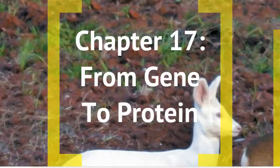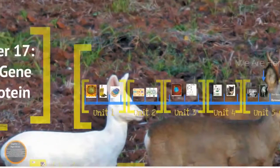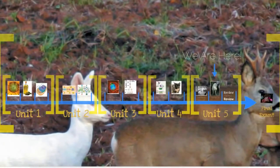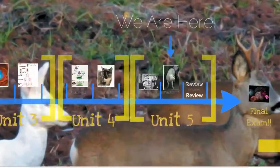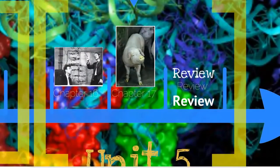This is our last chapter of material for the course. Chapter 17 covers the process of turning DNA into protein. We are in our final unit of material. As a reminder, we will not have a regular exam over these course materials — instead, it will be included in your final exam.